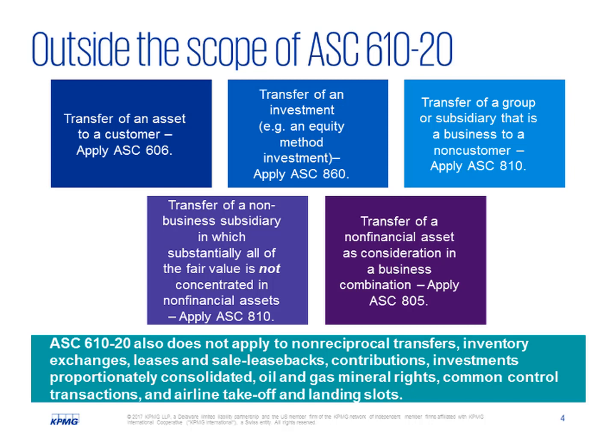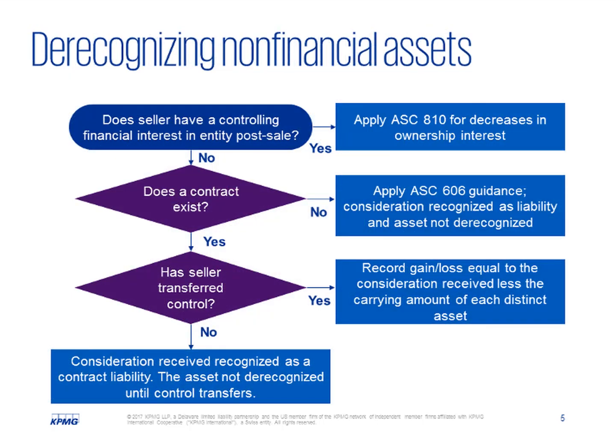Sam, that is helpful. It seems to me the definition of a business is pretty important to this standard. Maybe it would help if we walked through how and when to derecognize a non-financial asset. When an entity transfers non-financial assets included in a subsidiary and retains or receives an equity interest, it first determines whether it has retained a controlling interest in the subsidiary's assets. If so, the entity does not derecognize the assets and accounts for the sale of the non-controlling interest under the consolidation guidance covering decreases in ownership. That guidance results in recognizing the gain or loss in equity.